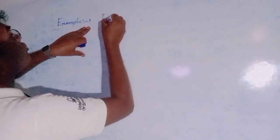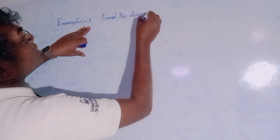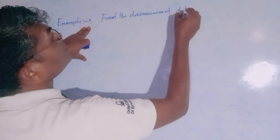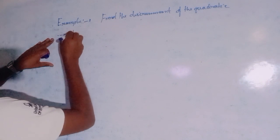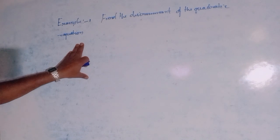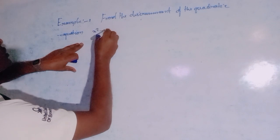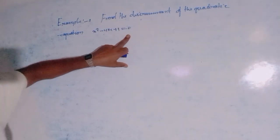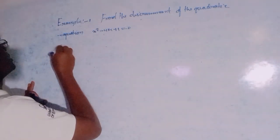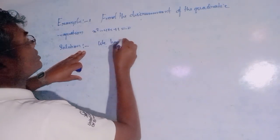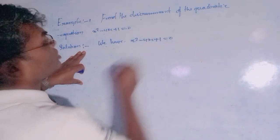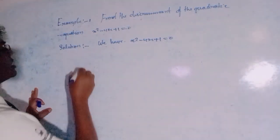Example one: Find the discriminant of the quadratic equation x squared minus 4x plus 1 is equal to 0. This is our quadratic equation. We have x squared minus 4x plus 1 equals 0. Comparing with the standard quadratic equation form.